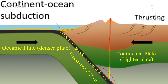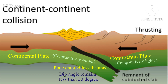Where the denser plate goes deeper — almost 50 to 70 kilometers deeper into the Earth's interior — the dip angle ranges from above 30 degrees to 90 degrees. But if two plates of almost the same density collide, then the comparatively denser plate goes below the comparatively lighter plate.